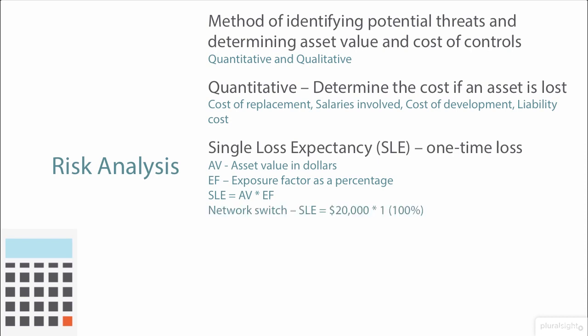Let's look at an example using a network switch. Say the cost of the switch plus the time to replace it — including salary — comes to $20,000. If the switch fails, it's a 100% failure: we lose that portion of the network. So we take $20,000 times 1 (100% failure), which gives us a Single Loss Expectancy of $20,000.